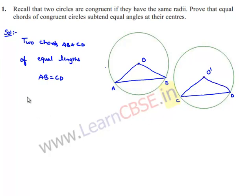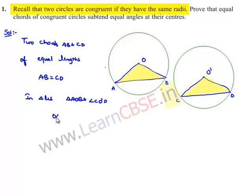In order to prove this, let us consider both triangles — that is, triangle AOB and triangle CO'D. OA is equal to O'C, since the figures are congruent their radii will be equal. And OB is equal to O'D, since the figures are congruent their radii will be equal.